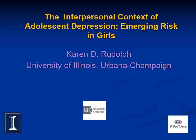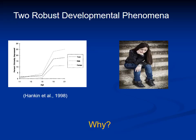We started with the goal of understanding two very well-established developmental phenomena associated with depression. First, there's a sharp rise in depression that occurs during adolescence. Second, there's an emergence of a gender difference in depression, with females showing higher levels than males starting at about 13 to 15 years of age, and this gender difference continues throughout the lifespan.